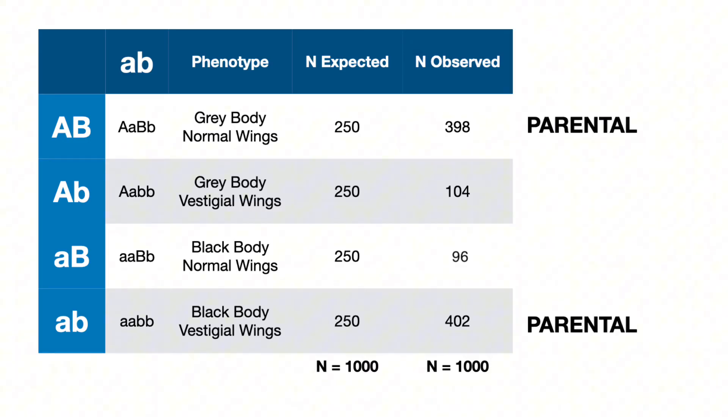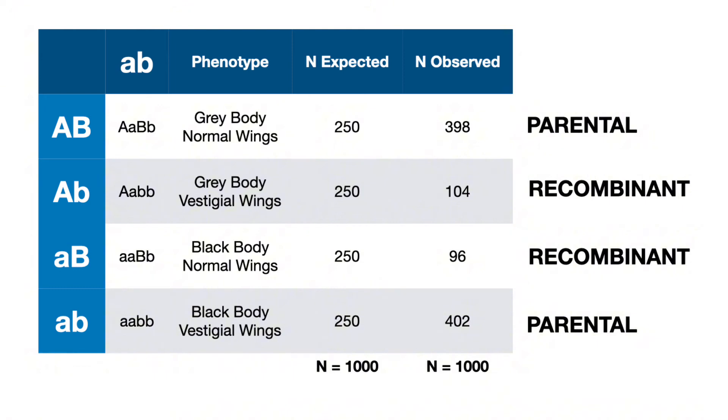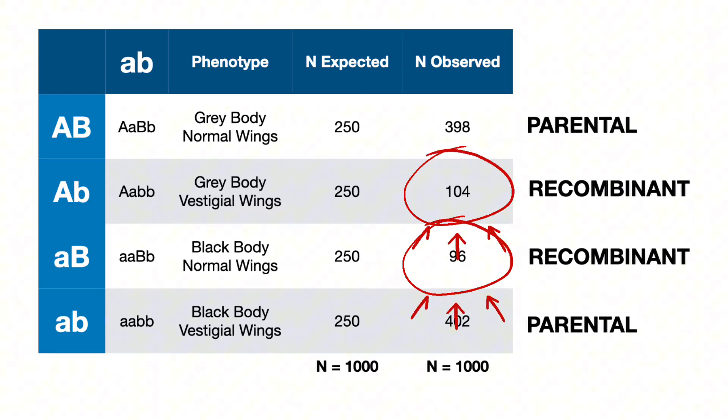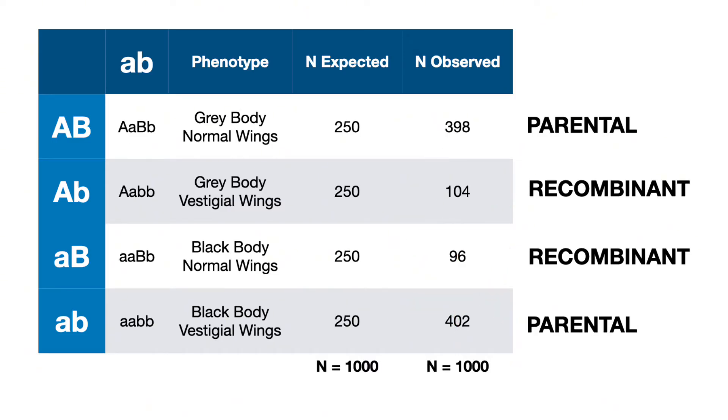We would expect a 1:1:1:1 ratio if these genes were independently assorting with complete randomness in gamete formation from the dihybrid individual. But we don't have that, which leads us to believe these are in fact linked genes. In tables like this, we can use terminology to categorize offspring into parental types and recombinant types. Parental types are overrepresented because the parental combination of alleles did not reshuffle during meiosis. Recombinants are those few that did recombine and ended up in the offspring's genotype.